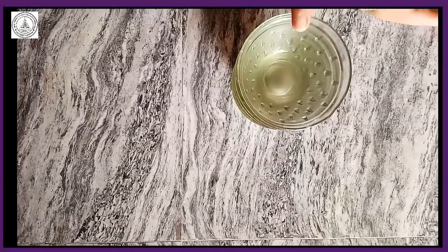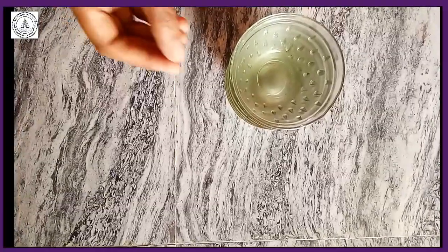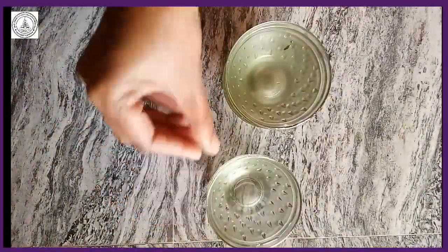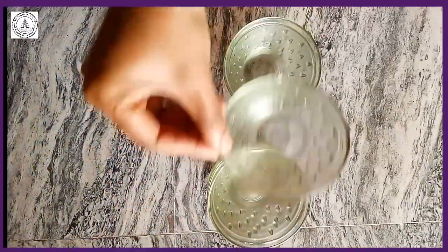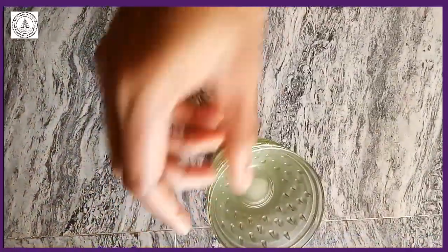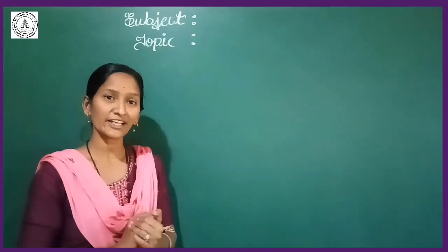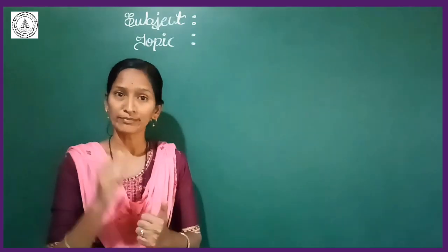Here are some bowls. Now I am going to count the number of bowls by using numbers. Look here: 1, 2, 3, 4, 5, 6, 7. The total number of bowls are 7 here. In that, I am counting the number of bowls by using numbers.